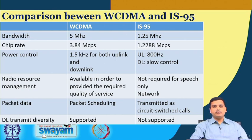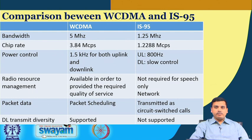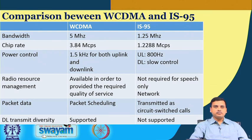Packet data scheduling came into play in WCDMA, where packets could be scheduled at different times, whereas in the previous system it was circuit-switched calls using predefined time slots for transmitting data. Transmit diversity was supported in the new system but not in the previous generation system.